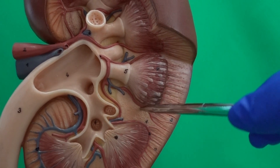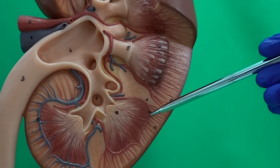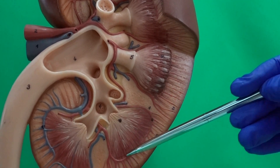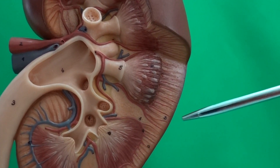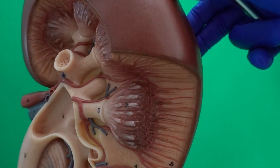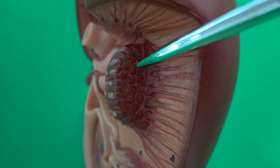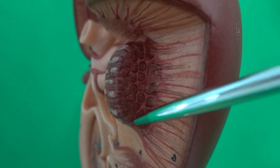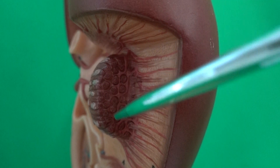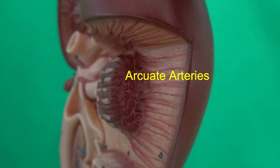When we follow the interlobar arteries, we see that eventually they form some arteries sitting exactly on the base of the renal pyramids. When I look at the base of this renal pyramid, I can see those arteries that sit exactly on the base. We refer to the arteries on the base of the renal pyramid as arcuate arteries.